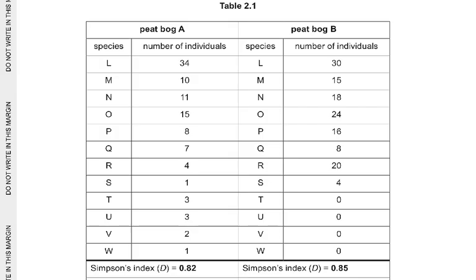The results are shown in Table 2.1. Take time to look at peat bog A and peat bog B. The species data includes values such as 34 and 30, 10 and 15, 11 and 18, 15 and 24, 8 and 16, 7 and 8, 4 and 20, 1 and 4, 3 and 0, 3 and 0, 2 and 0.